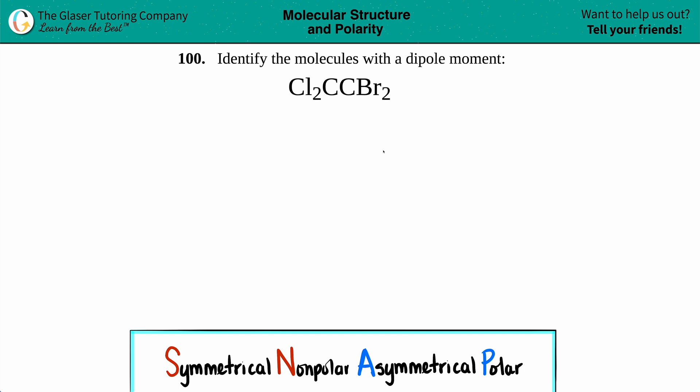Number 100: identify the molecules with a dipole moment. We have Cl2CCBr2. We need to find out if this molecule has a dipole moment. Dipole moments are only found in molecules that are polar.